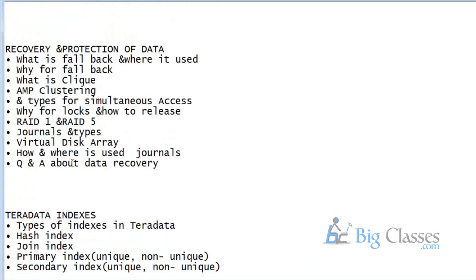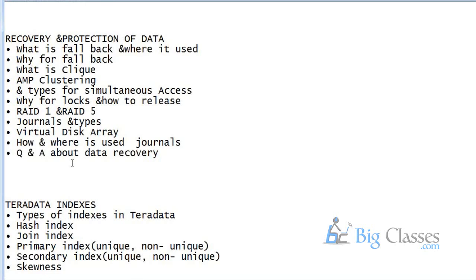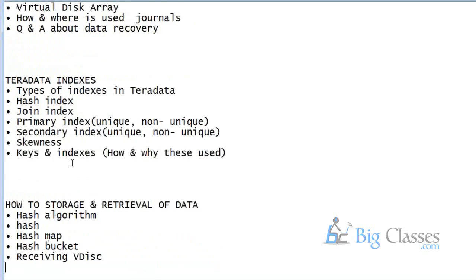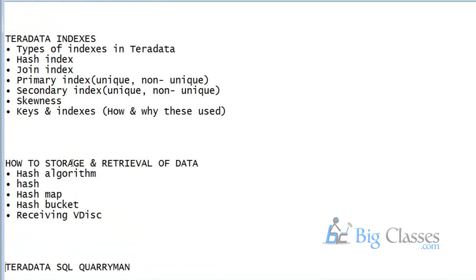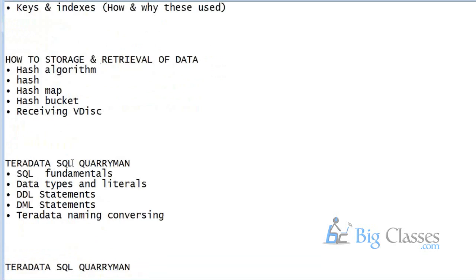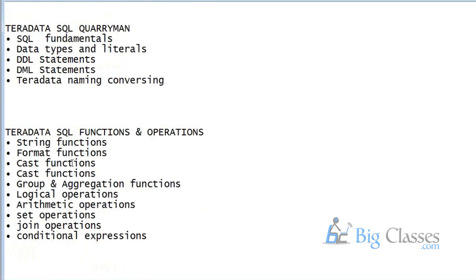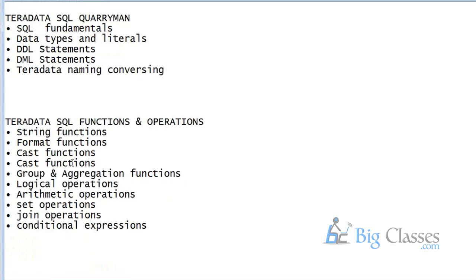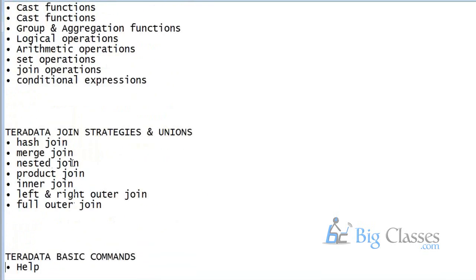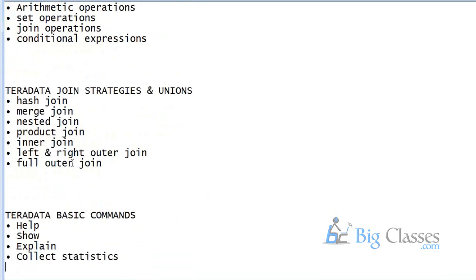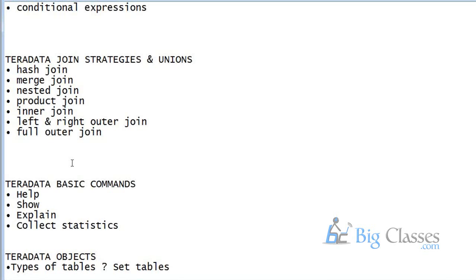We will cover the different types of indexes available in Teradata, data storage and retrieval, how data gets stored in the system via the hashing algorithm, and then the SQL part — DDL, DML, and DCL. We'll also cover string functions, aggregate functions, and OLAP functions — the different types of functions available in Teradata.